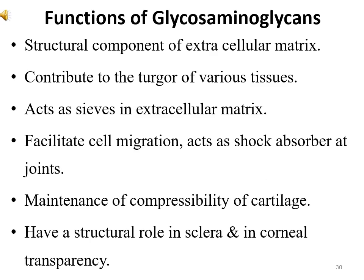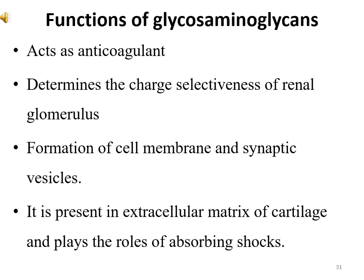Functions of glycosaminoglycans: they are structural components of the extracellular matrix and contribute to the texture of various tissues. Glycosaminoglycans act as sieves in the extracellular matrix, facilitate cell migration, and act as shock absorbers at joints. They maintain the compressibility of cartilage, have a structural role in the sclera and corneal transparency, act as anticoagulants, determine the charge selectiveness of the renal glomerulus, and are involved in the formation of cell membranes and synaptic vesicles.